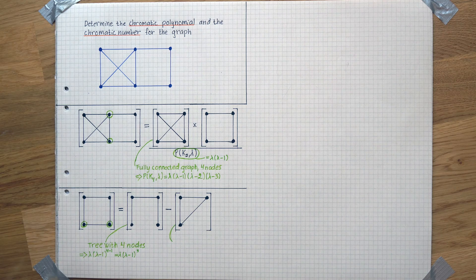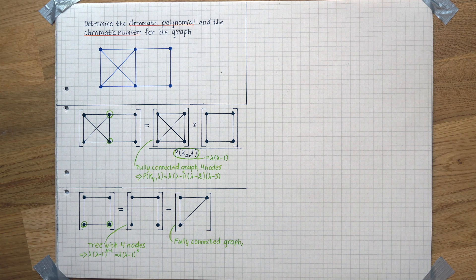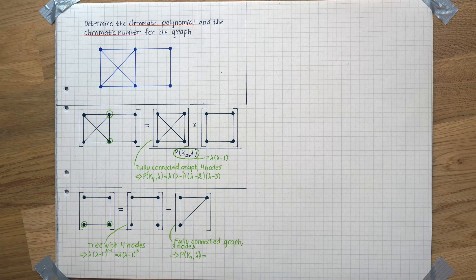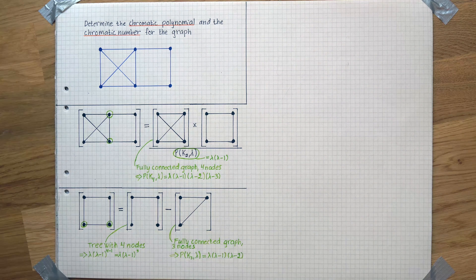And here we have a fully connected graph with three nodes giving us P(K3, lambda) that is equal to this.